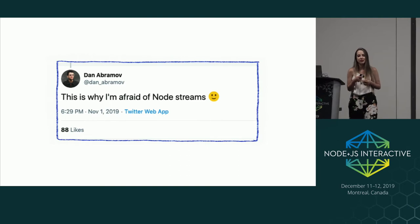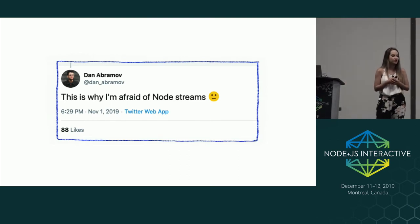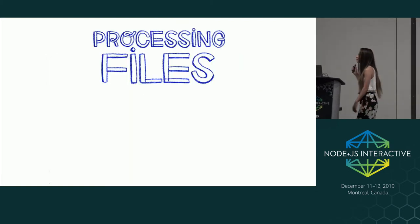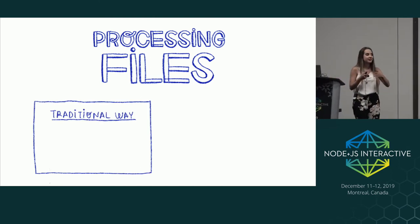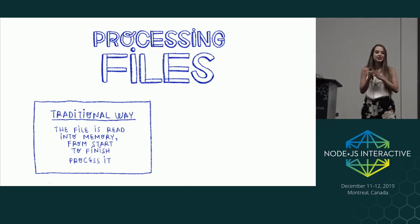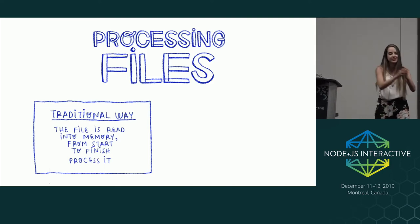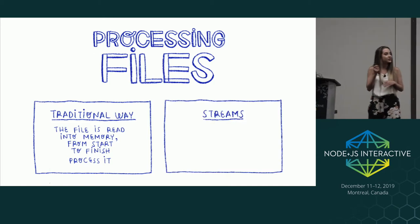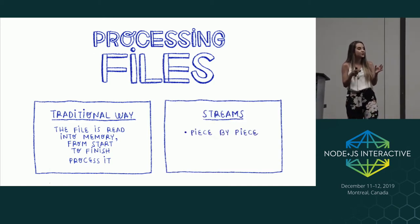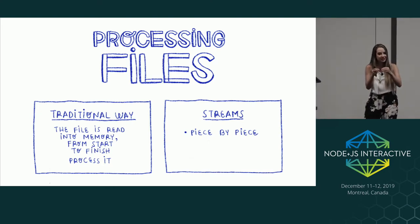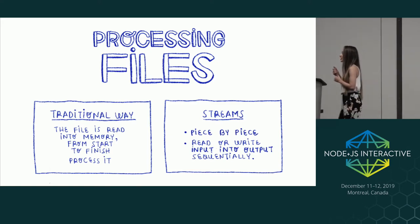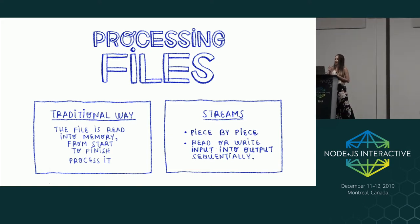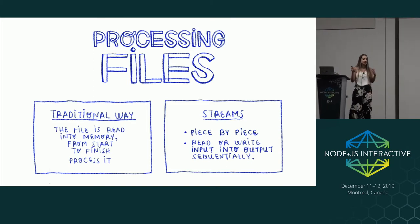Even Dan Abramov, creator of Redux and Core Team Member of React, is afraid of Node.js. But don't worry, we can figure this out. Let's start with the basics. When you tell a program to read a file in a traditional way, that file is read into memory from start to finish, and then it processes it. With a stream, it's quite different — that file is read piece by piece, processing its content without keeping it in memory. It's also used to read or write input into output sequentially, and streams are very useful for working with very large amounts of data.